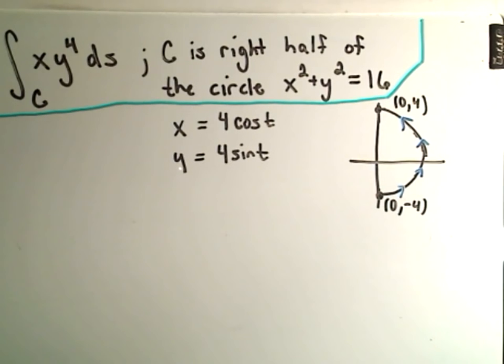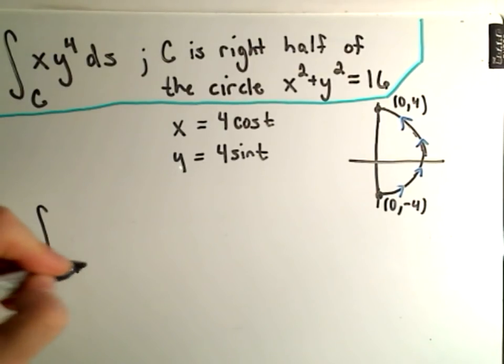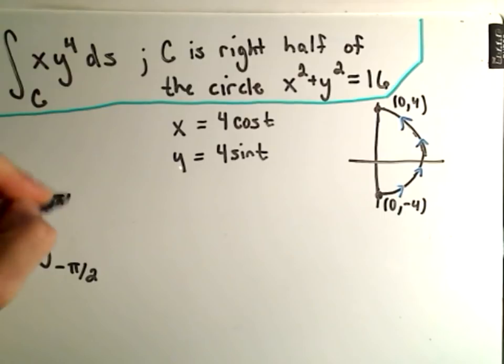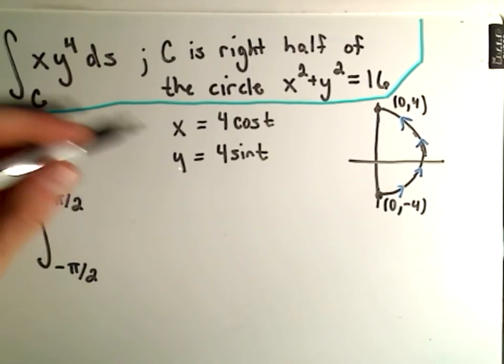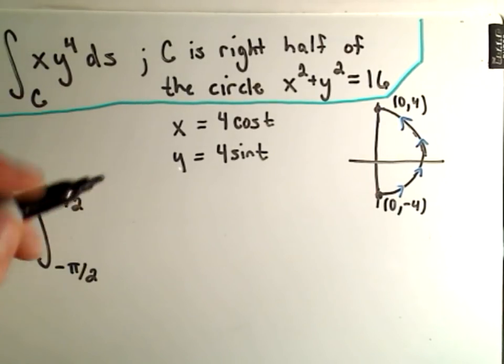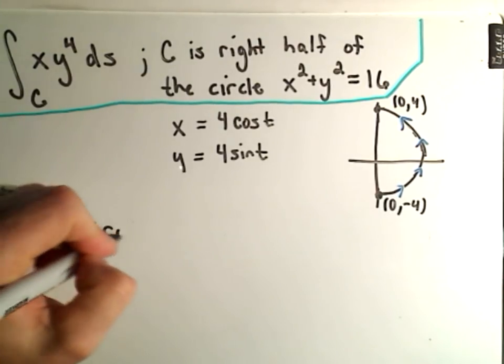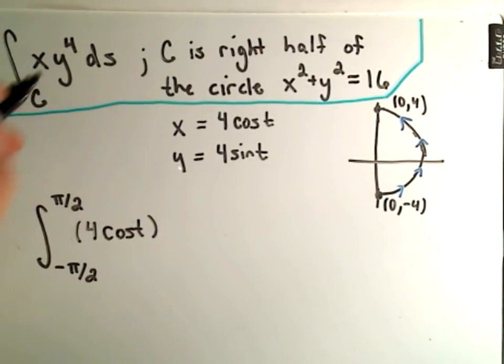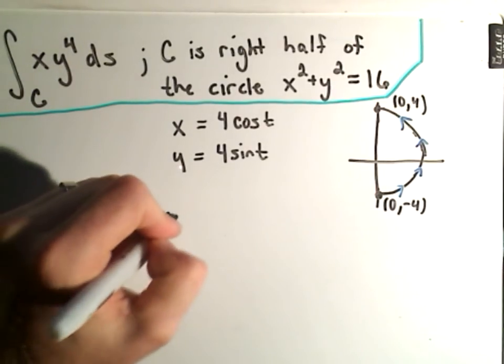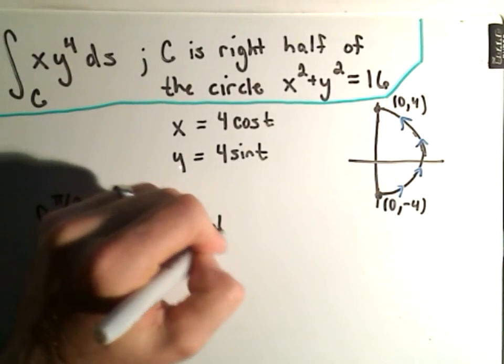So it says using our previous formula there, it says what we're going to get is, we have to integrate. We're going to integrate from -π/2 to positive π/2. We replace x with its parametrization, so x is going to become 4cos(t). Y is going to become 4sin(t), but again that's to the fourth power here.